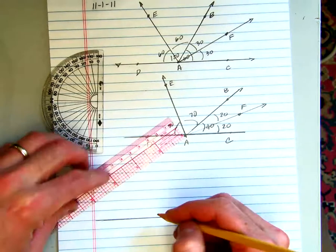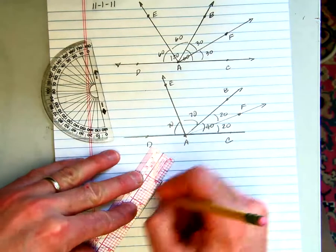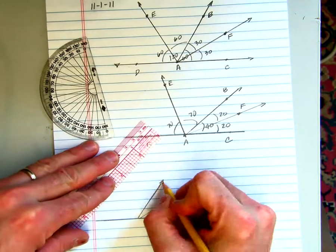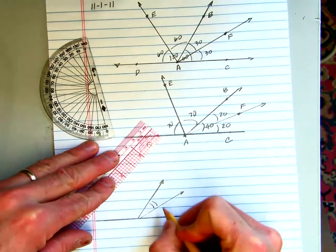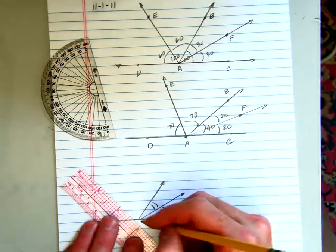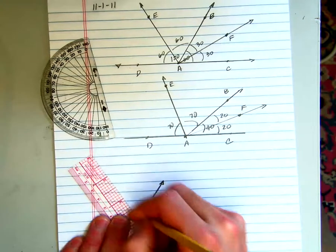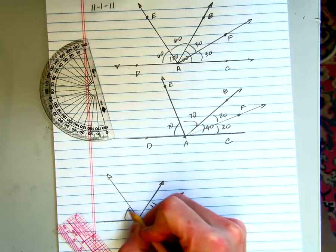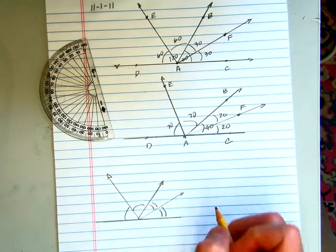We have a setting that sort of looks like this, where these two angles are always the same, and this angle and this angle and this angle are always the same.